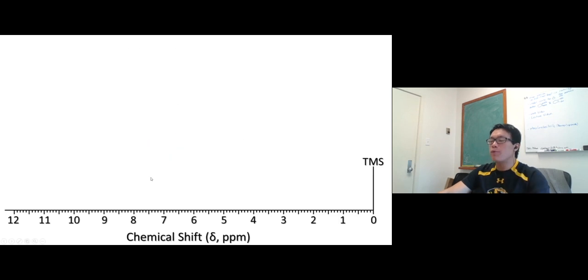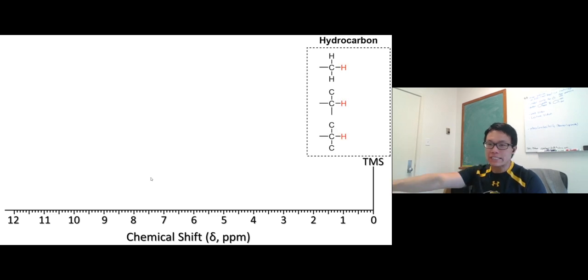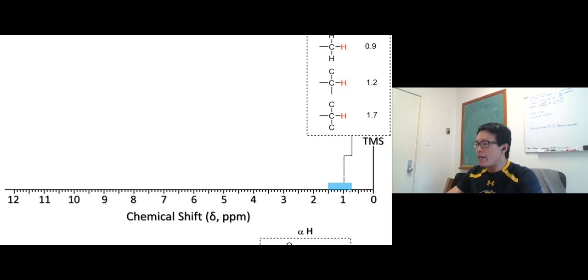In carbon NMR I gave you a chart. Now, proton NMR has its own chart. Let's take a look. On the right side, hydrocarbon always on the right side, upfield. In carbon NMR and proton NMR, they're the same thing, they show up upfield. We have the primary carbon, secondary carbon, tertiary carbon: 0.9, 1.2, 1.7. Just think about 1.